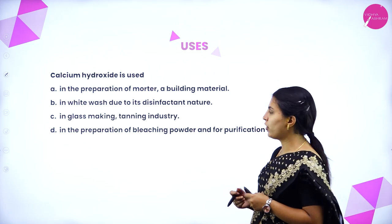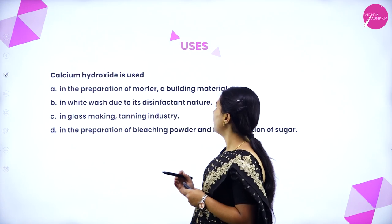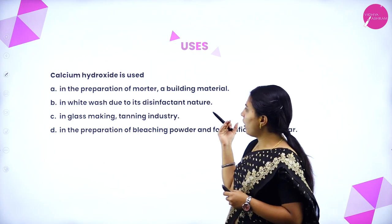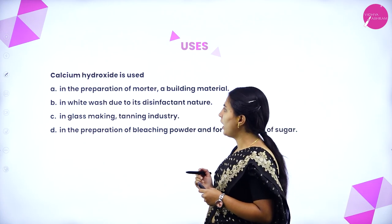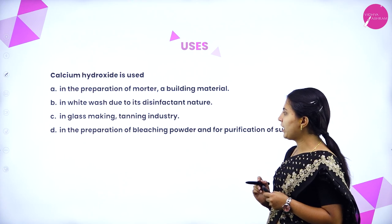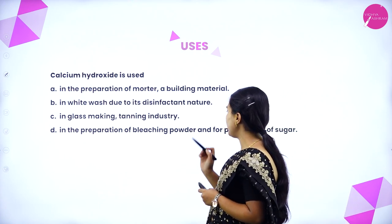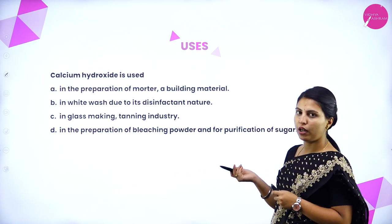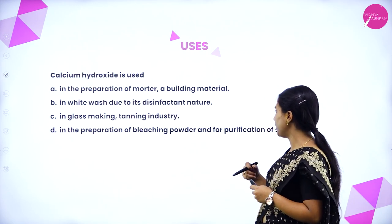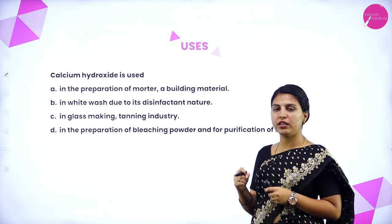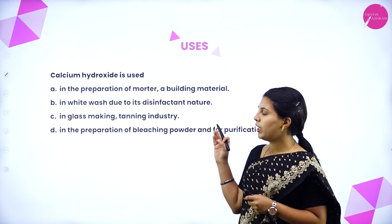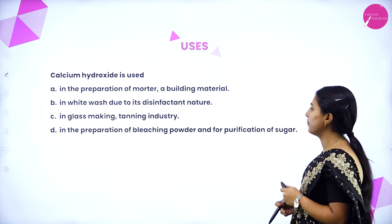Uses of calcium hydroxide: in the preparation of mortar, a building material; in whitewash due to its disinfectant nature; in glass making and the tanning industry; in the preparation of bleaching powder; and for the purification of sugar — the final purification step after sugar manufacturing uses calcium hydroxide.